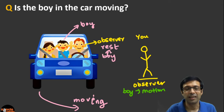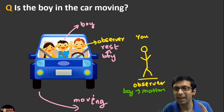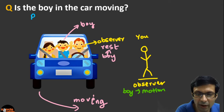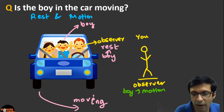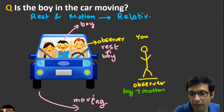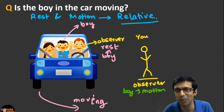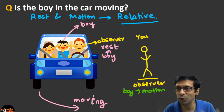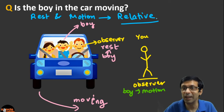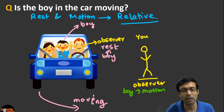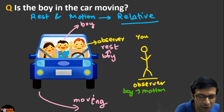This tells us that rest or motion is not an absolute thing — it depends on the observer. This is a very important point in physics: rest and motion are relative things. Those who said the boy is moving were right when you're the observer outside, and those who said the boy is not moving were also right when considering the people inside the car. Please remember this important concept: rest and motion are relative terms.